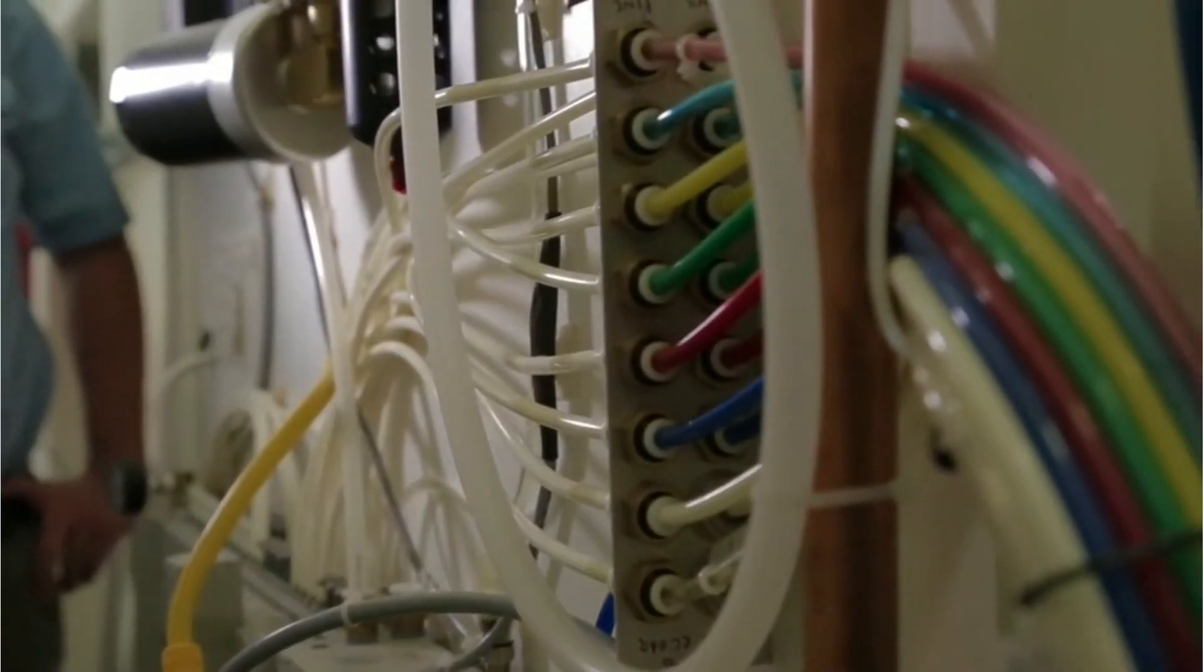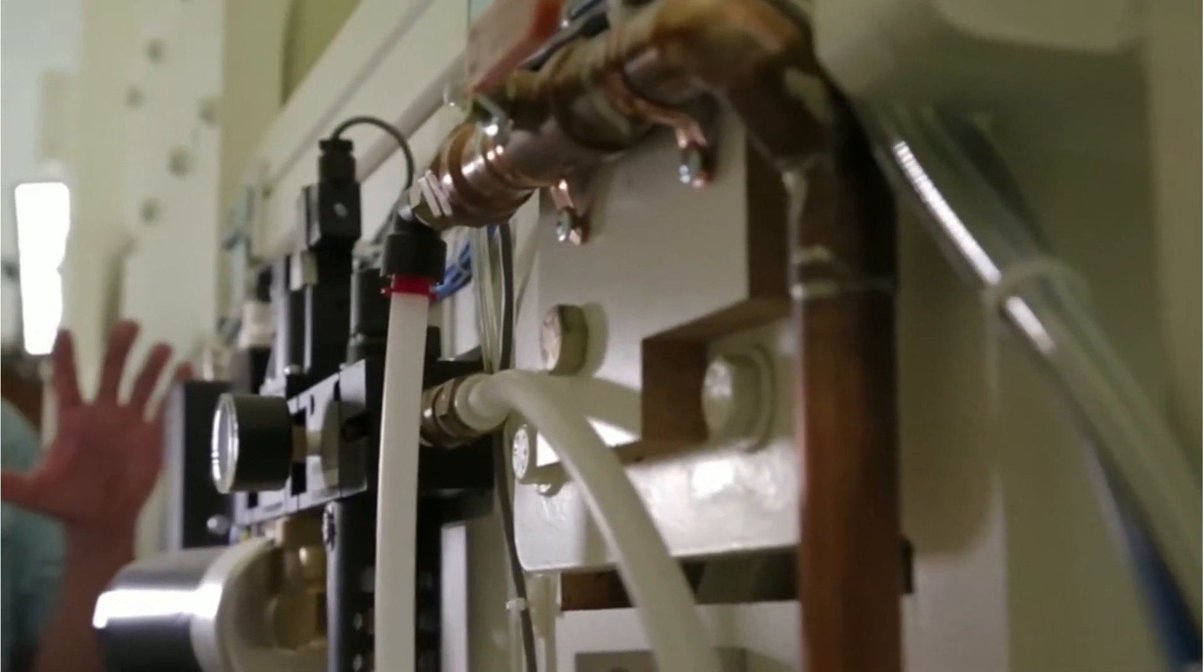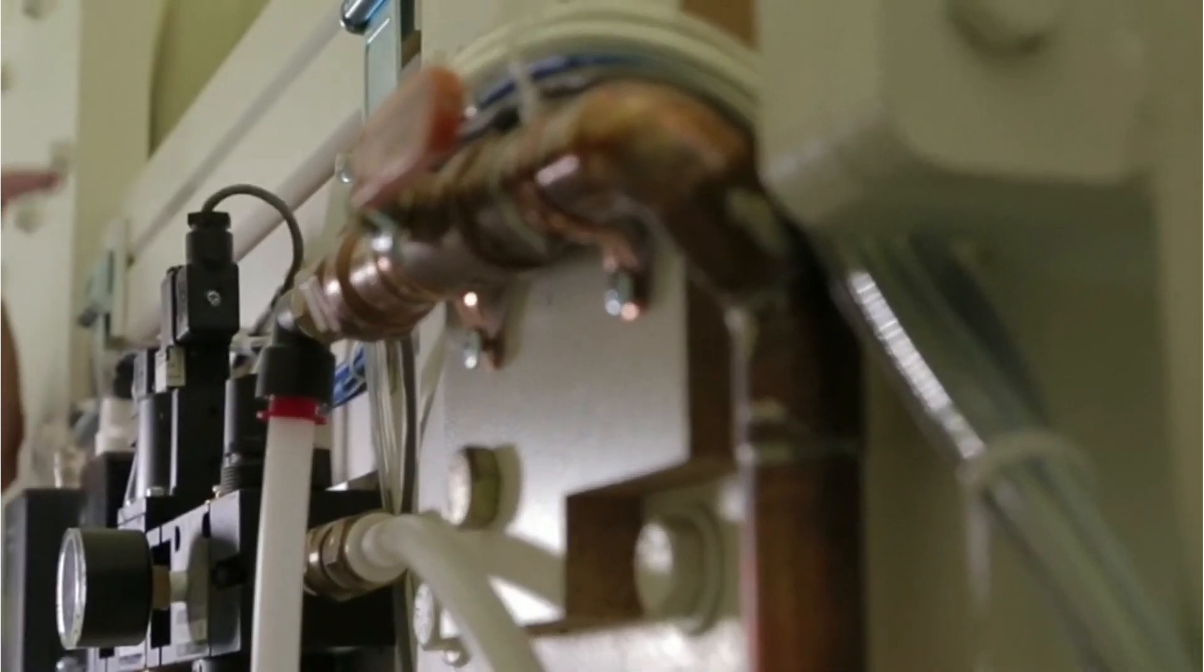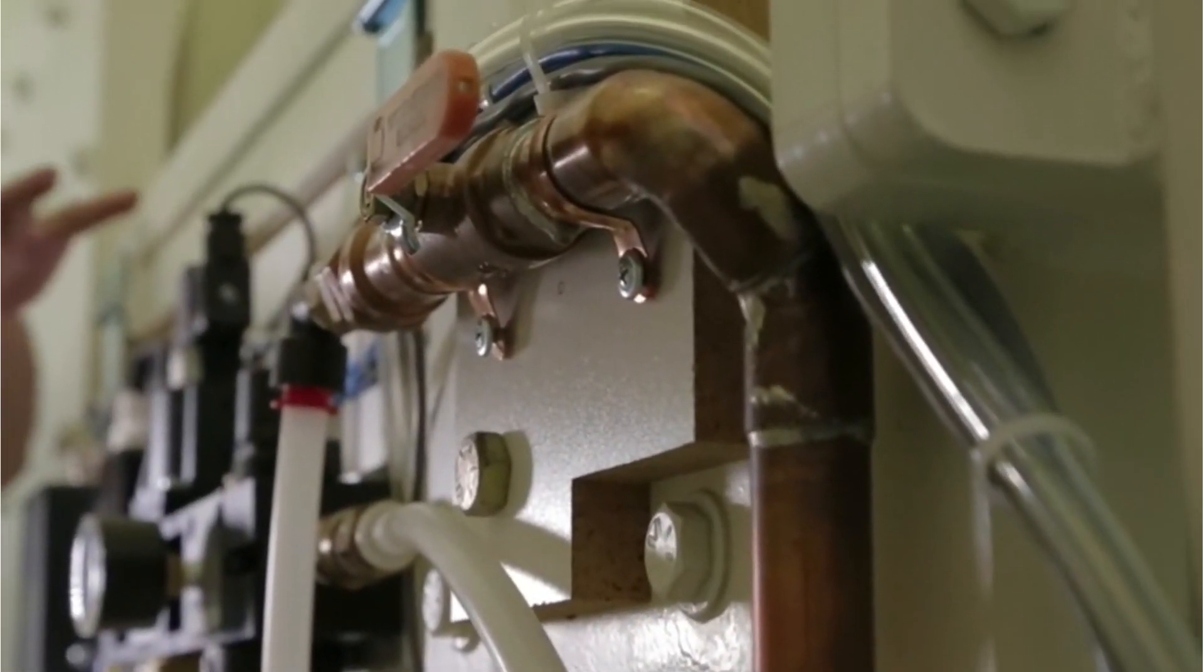So here's the back side of the robot. This is about a four-foot-square panel. At the top up here is where the compressed air comes in. It's filtered, and then the air pressure is dropped down a little bit.